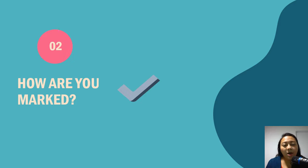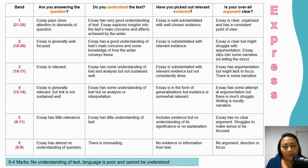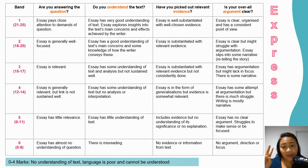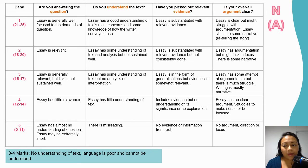Now we're in part two — how are you marked? These are the band descriptors; I've simplified them for you. Give yourself a few moments and pause the video here to look through the band descriptors properly. Basically you'll be assessed in four ways: are you answering the question, do you understand the text, have you picked out relevant evidence, and is your overall answer clear? Feel free to pause the video to look at the normal academic band descriptors as well.